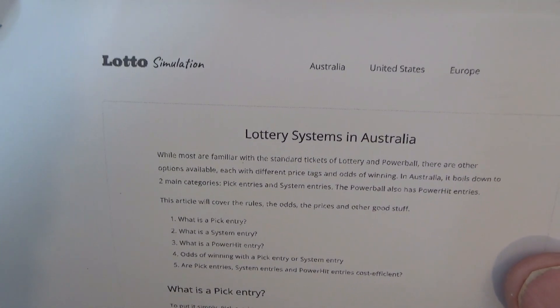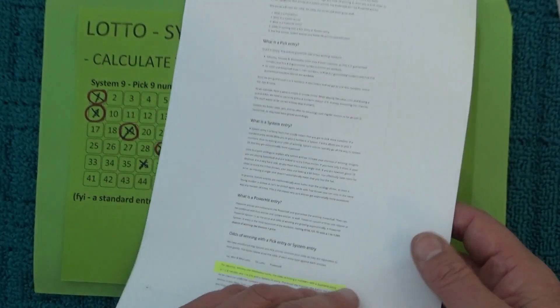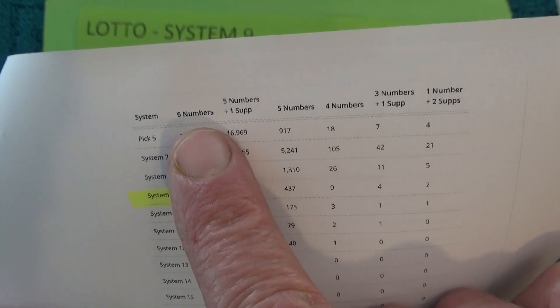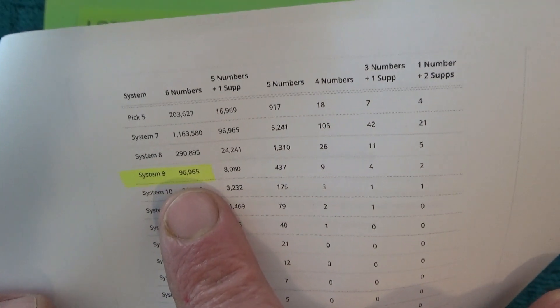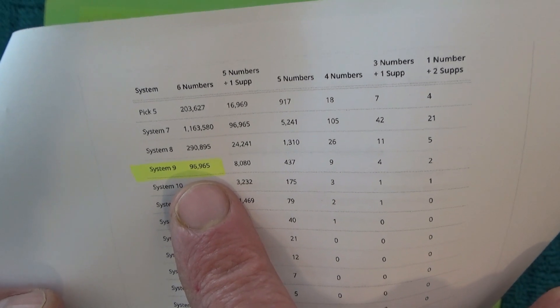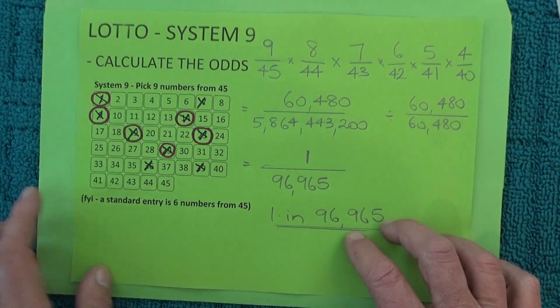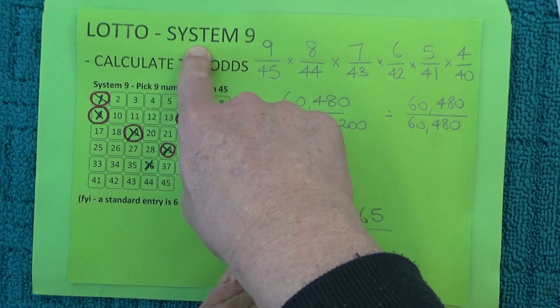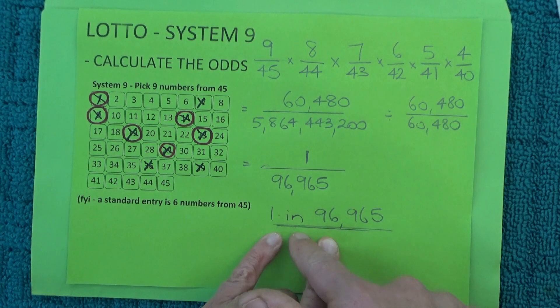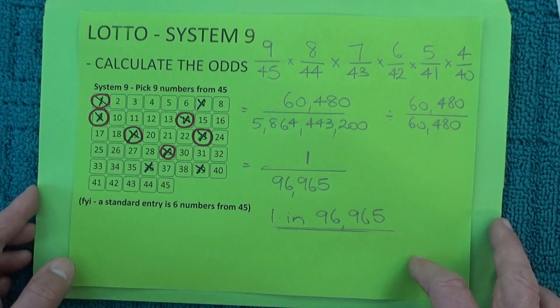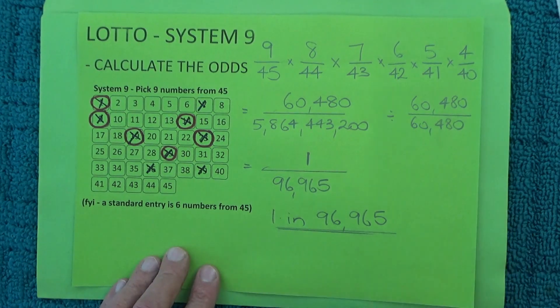To prove that's correct, I've got this Lottery Systems in Australia printout from their website. Going to the next page it shows the odds there: System 9 for a six-number lotto is 96,965 — exactly the number I worked out on this sheet of paper. So that's the odds of winning first prize in Lotto using a System 9 entry: one chance in 96,965. I hope you've enjoyed this video, thank you for watching and goodbye for now.